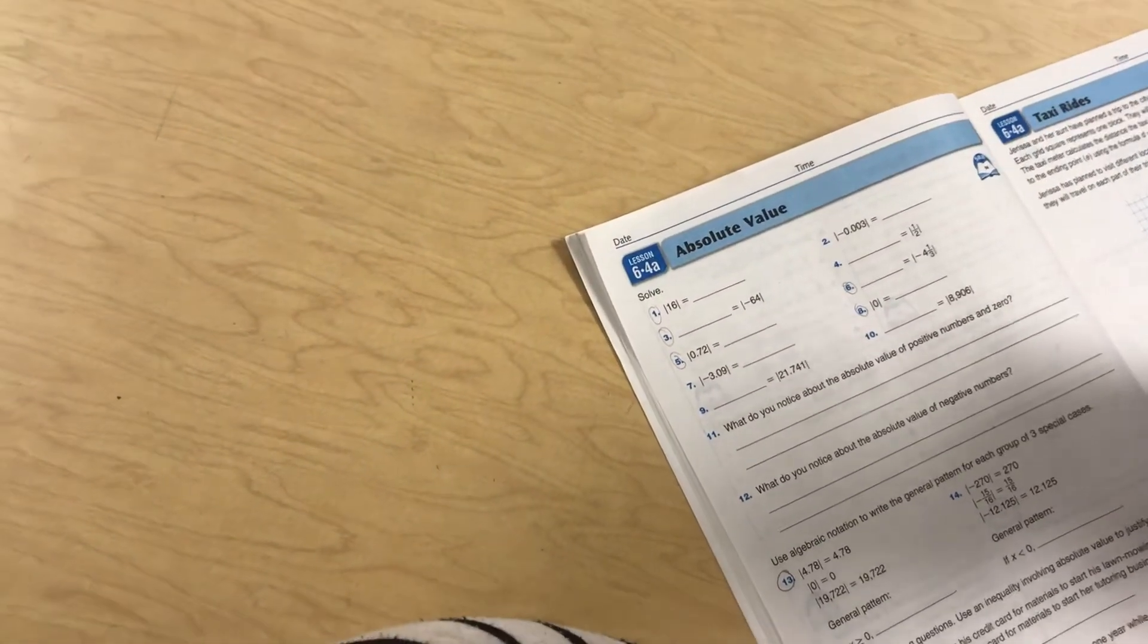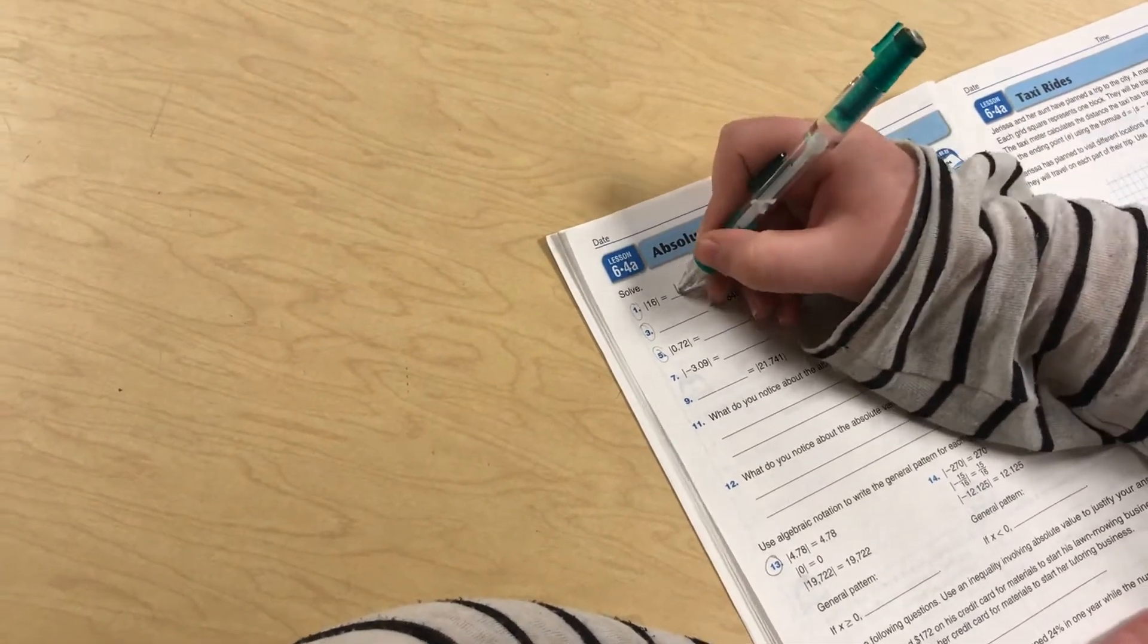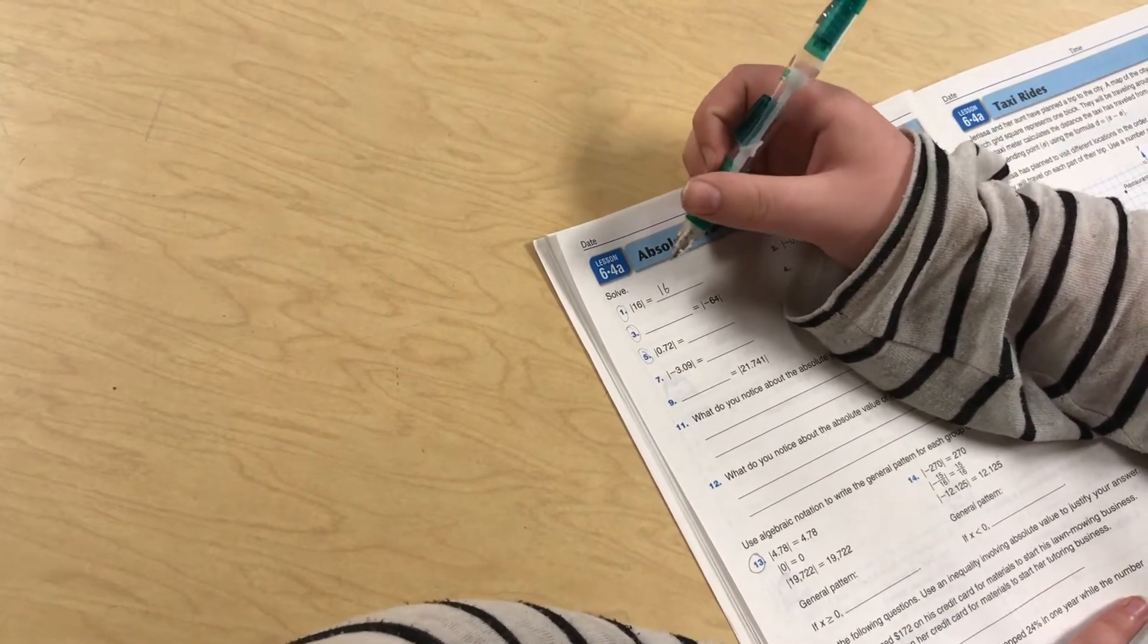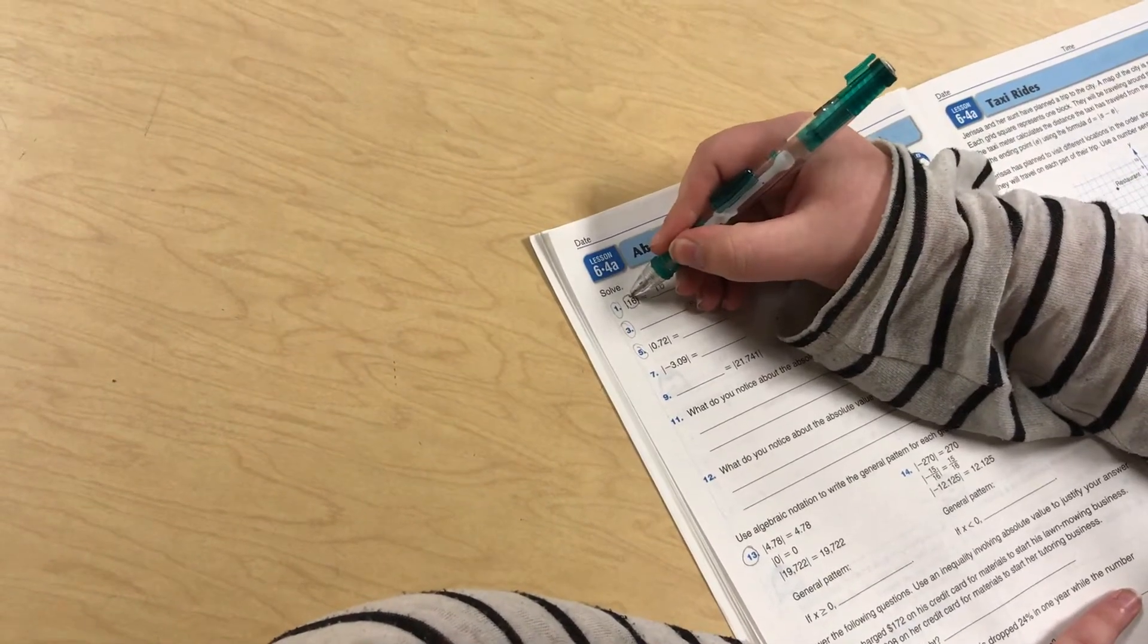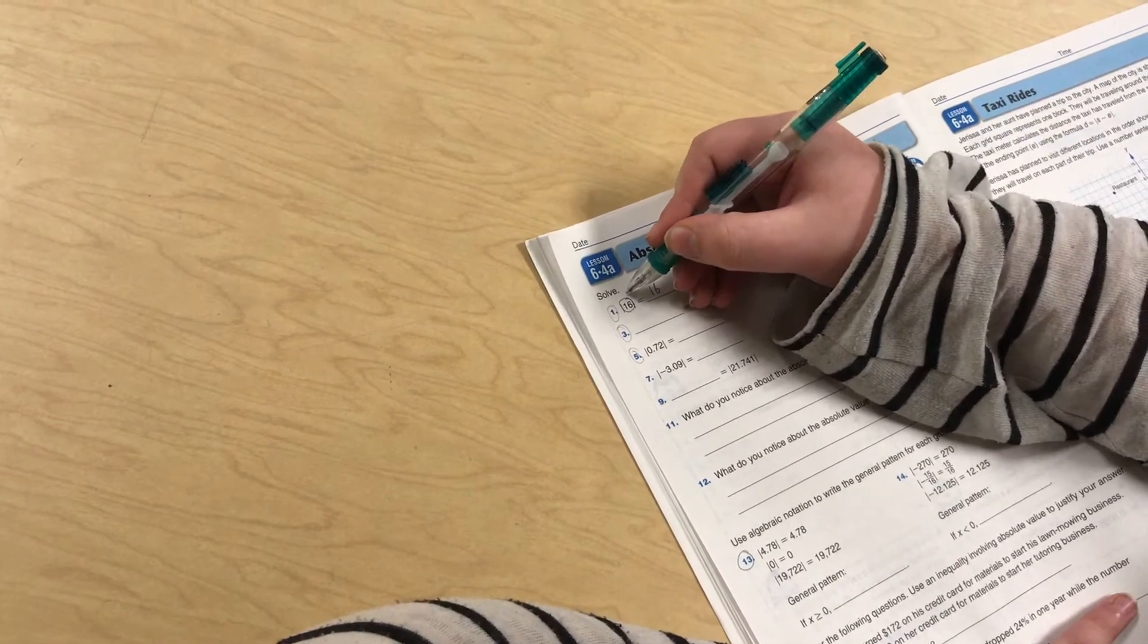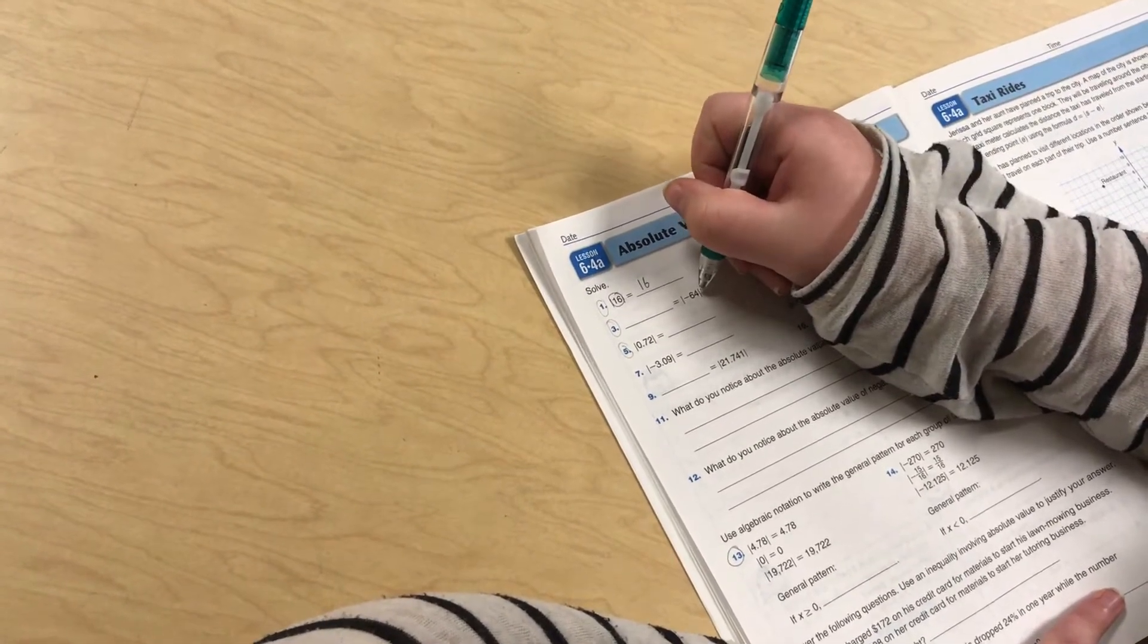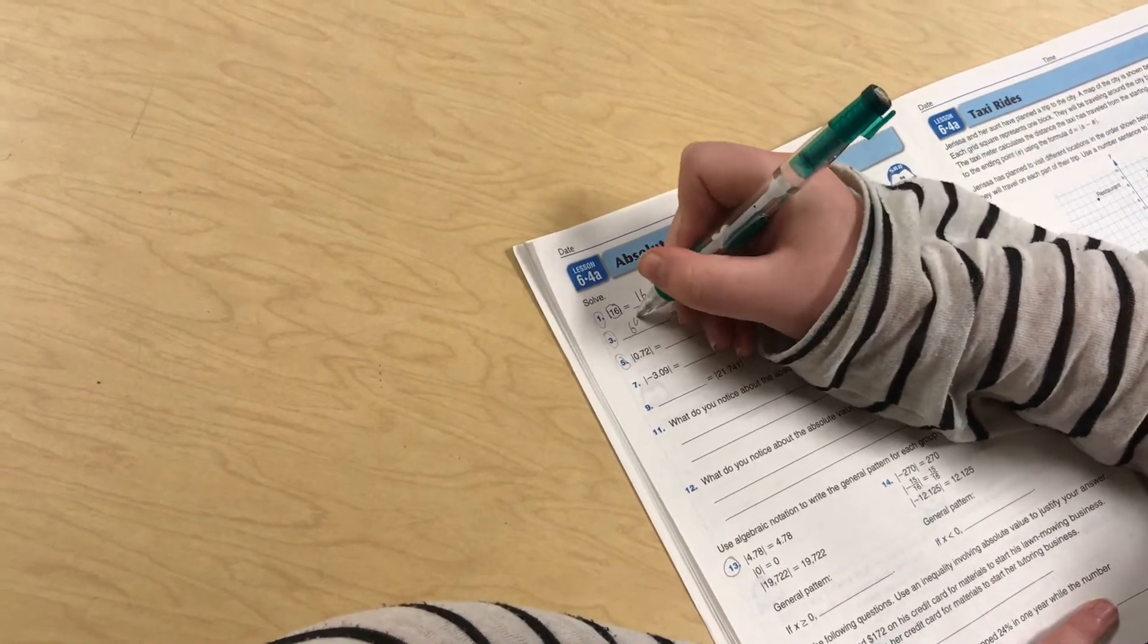We're doing absolute values today. The absolute value of 16 is 16 because absolute value is when you take a number and measure how far it is from 0, which is 16. And then with negatives, how far is negative 64 from 0? That would be 64.